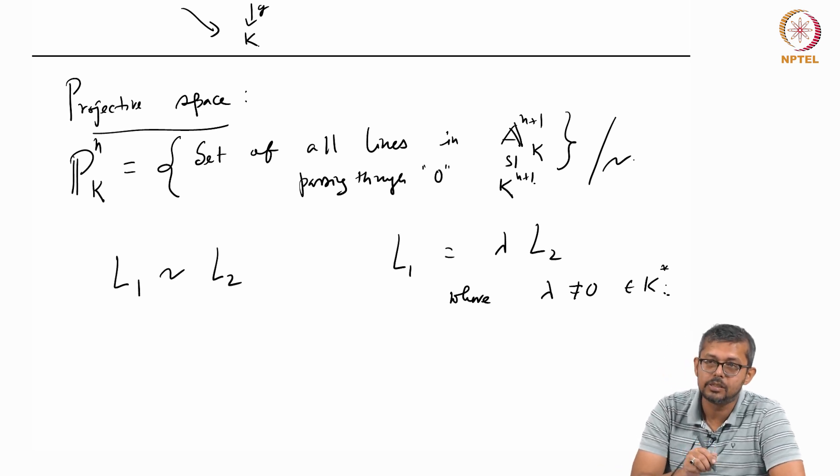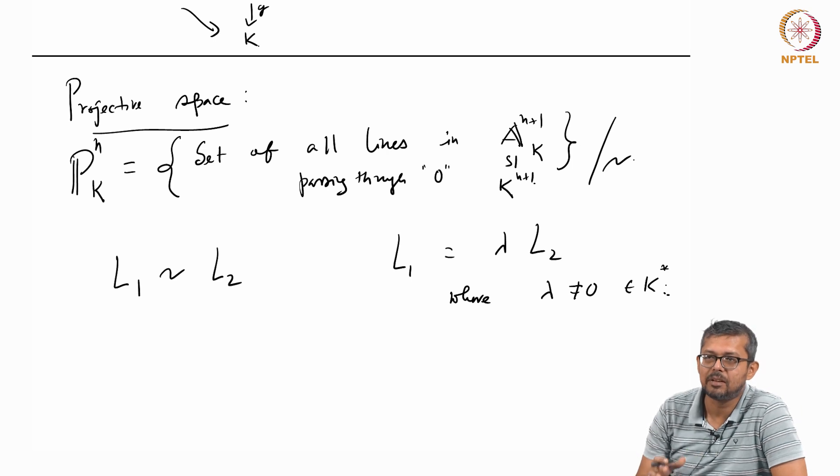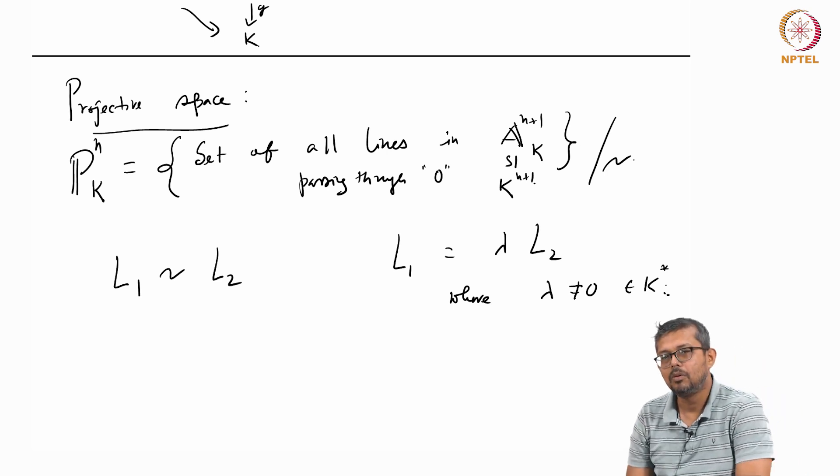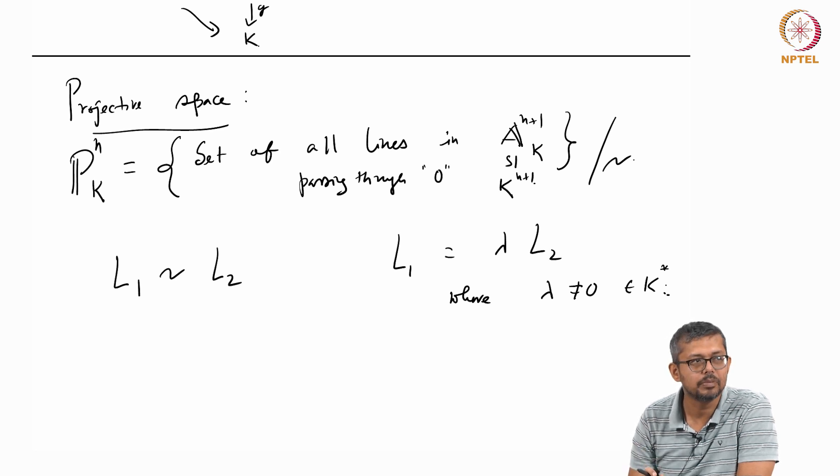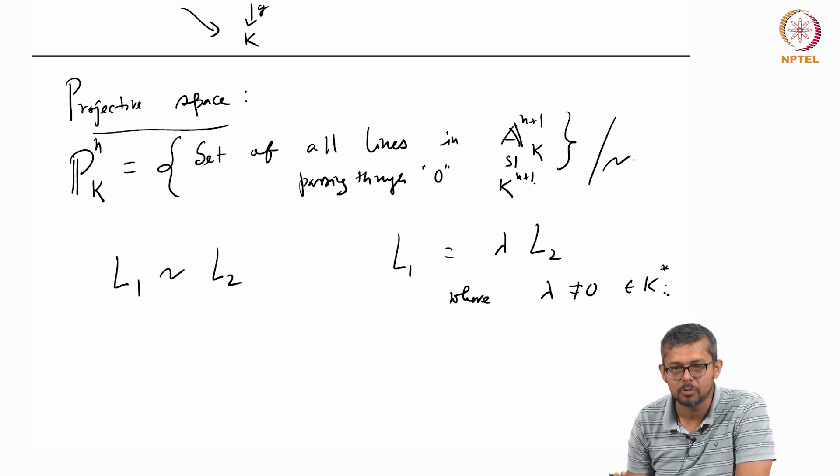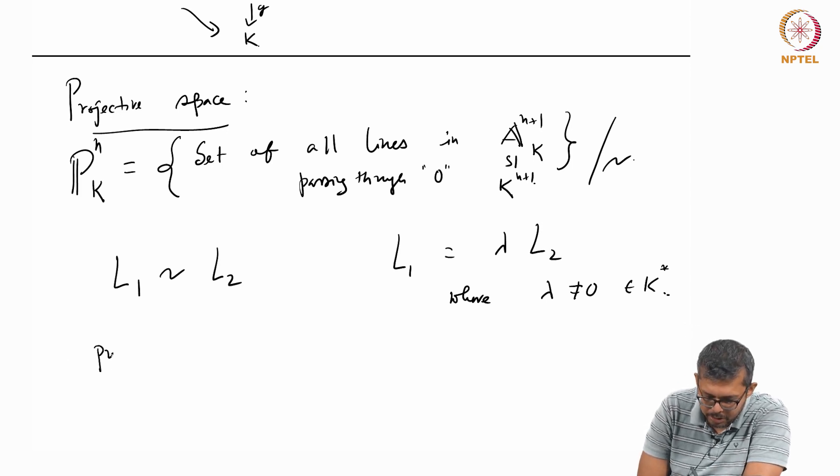Now the point is that on this set I want to give a... this is like my experiment ground. This is a space which is a very important space. This is called projective space. This set is called projective space.